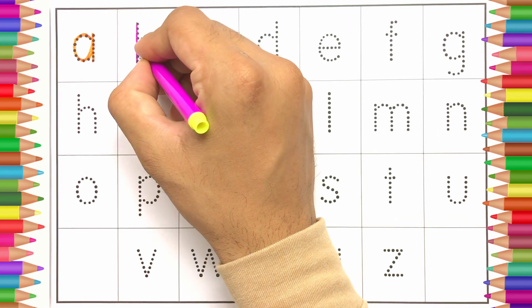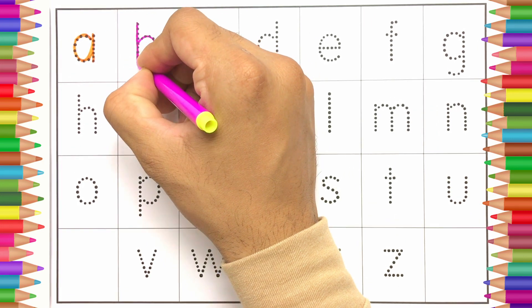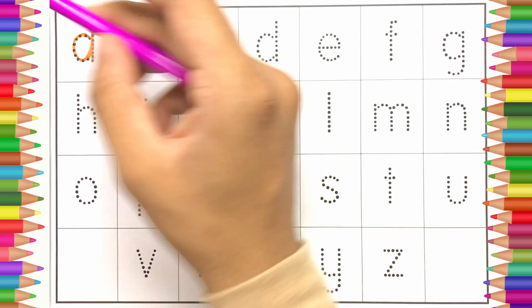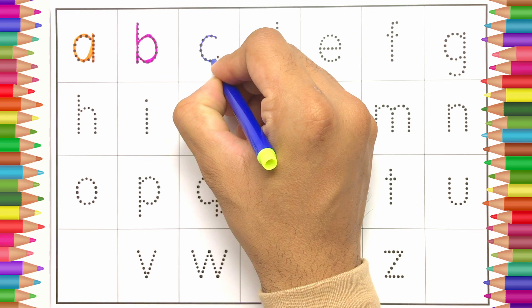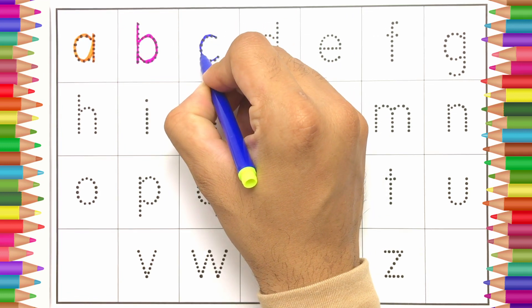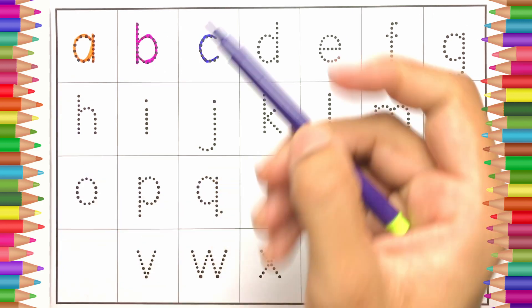बी बी फॉर बॉल (B, B for ball). C, C for cat.